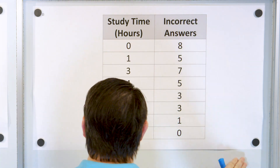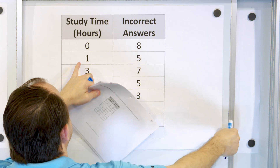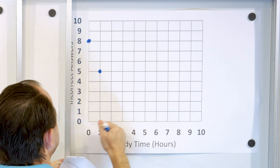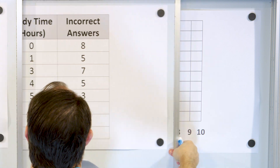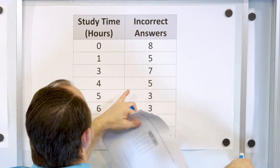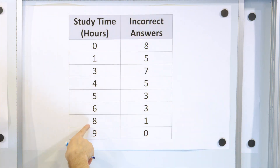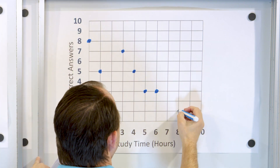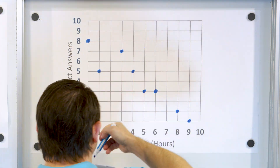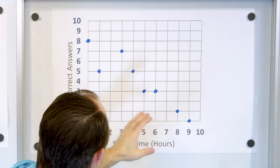At zero hours of studying, I get eight incorrect answers — so it's zero comma eight. Then I have one comma five. And then three comma seven, four comma five, five comma three, six comma three. And then eight comma one, nine comma zero. You just plot these like XY points — nothing special. We don't usually connect the dots because we want to focus on the dots themselves.